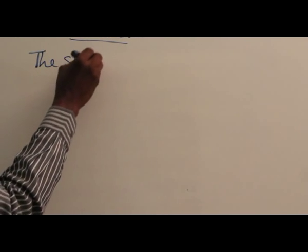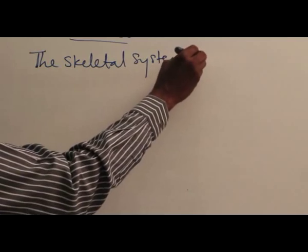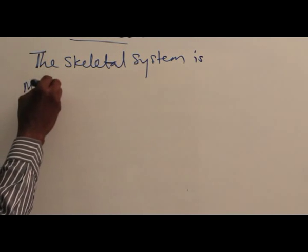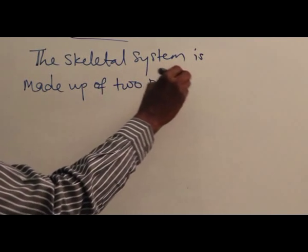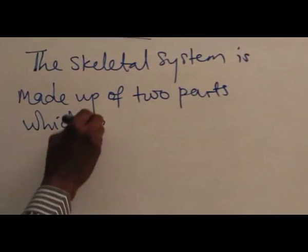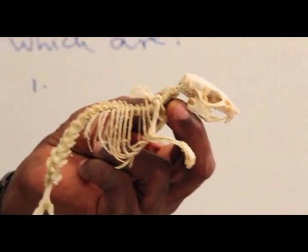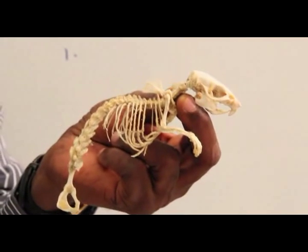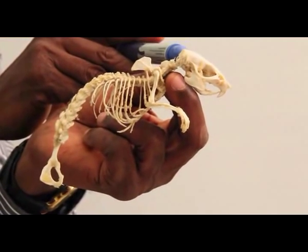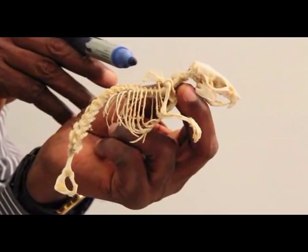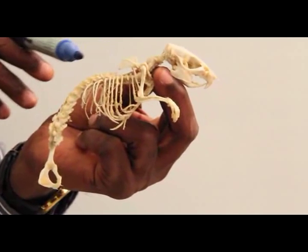The skeletal system is made up of two parts. The two main parts of the mammalian skeleton are the bones of the main body, made up of the bone of the head, the back bones, which we call the vertebral column — we call them vertebrae.